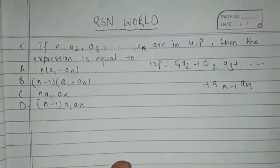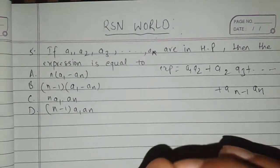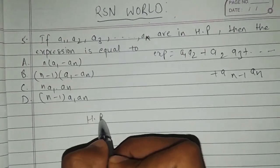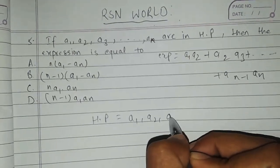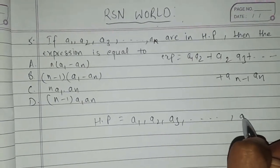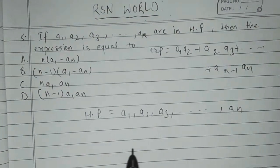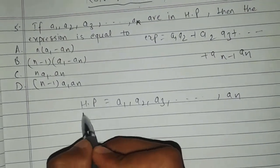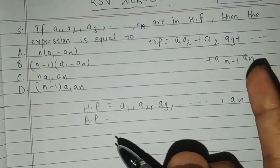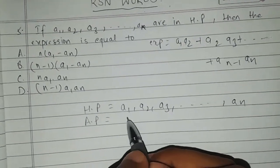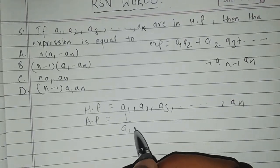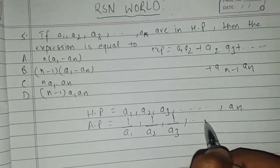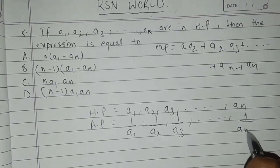Let us look at the equation. Remember it is in HP. We have got HP as a1, a2, a3, ..., an. Whenever we have something in HP, the AP will be the reciprocal of those terms. So the reciprocal of a1 is 1/a1, reciprocal of a2 is 1/a2, for a3 it is 1/a3 — we get the Arithmetic Progression also.